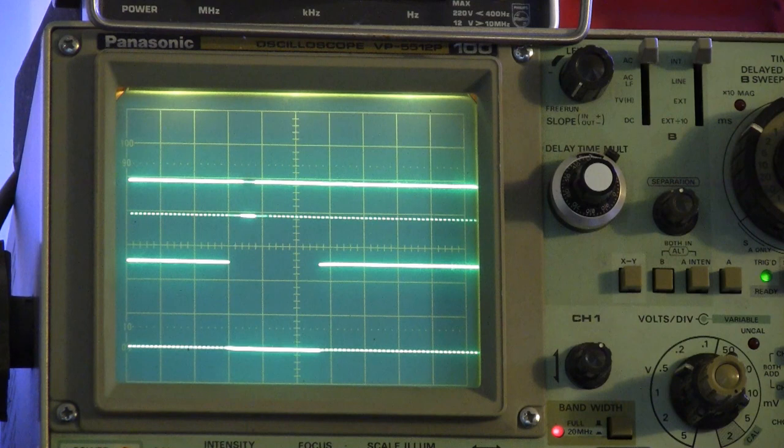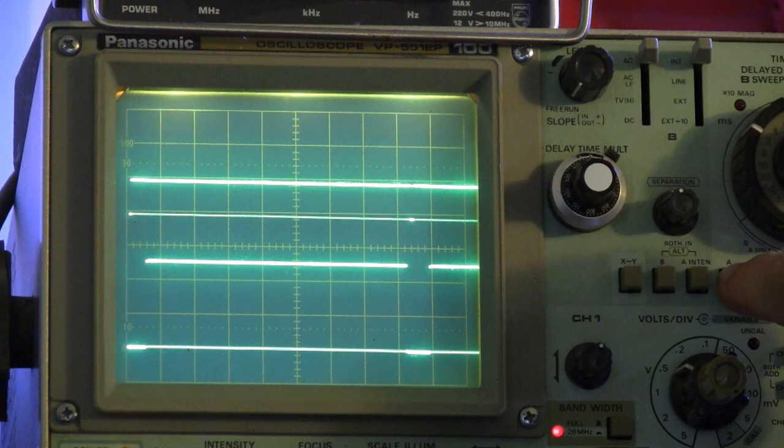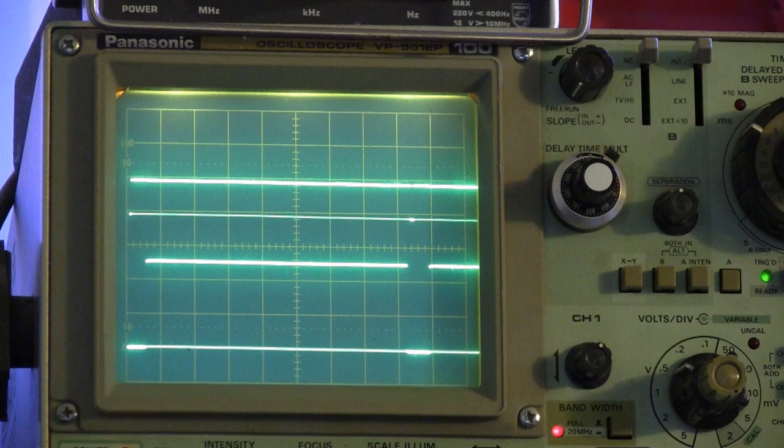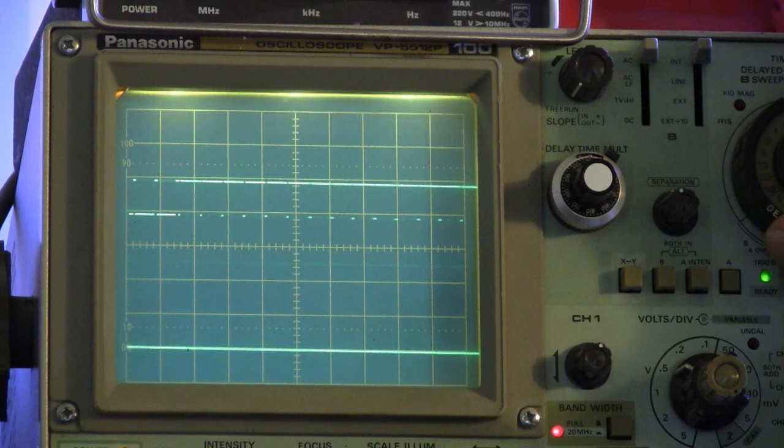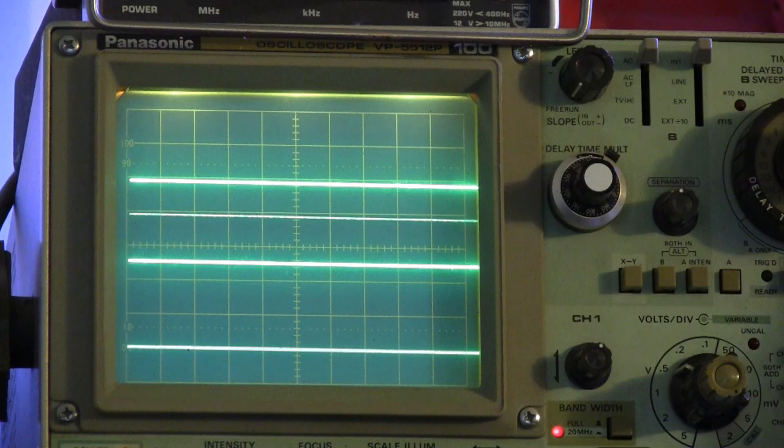So now let's get out of this delayed sweep and go back to normal sweep. And we will now switch to look at horizontal sync speeds. And for that, you turn your main time base to 10 microseconds and set your trigger to just regular AC trigger.